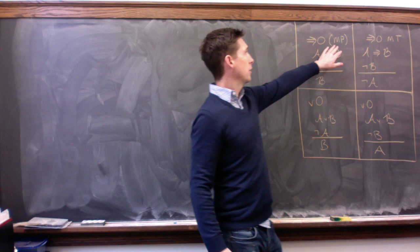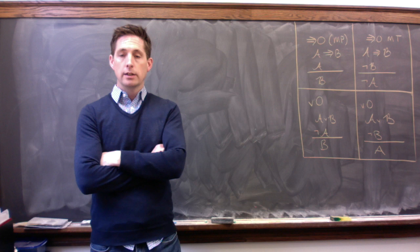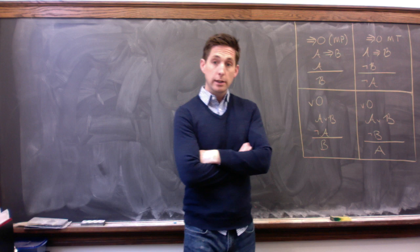Notice we call this one modus ponens and this one modus tollens. From here on out we're going to call these arrow out, and we'll say more about why that's what we call them. So we've got two different forms of arrow out, the modus ponens version and the modus tollens version.